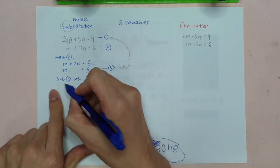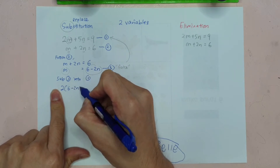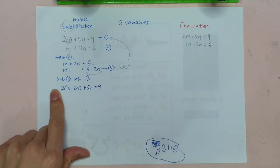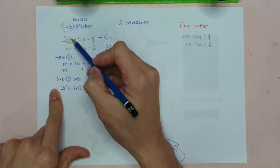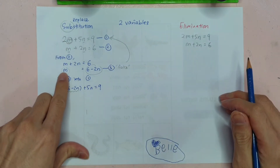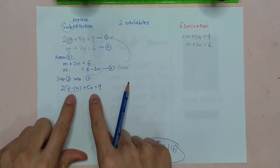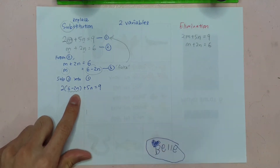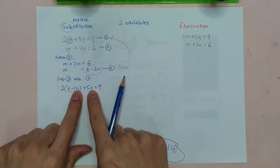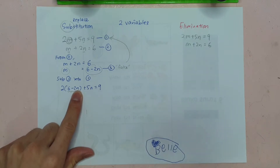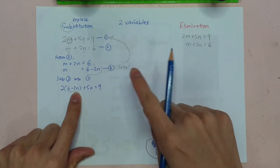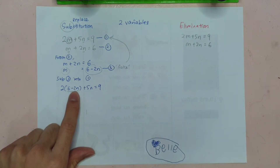So I sub equation 3 into equation 1. Look at this: 2M becomes 2(6 minus 2N), plus 5N equals to 9. Do you notice? The original M in equation 1 is replaced, and now it becomes a normal 1-variable equation — you're left with just 1 unknown to solve.